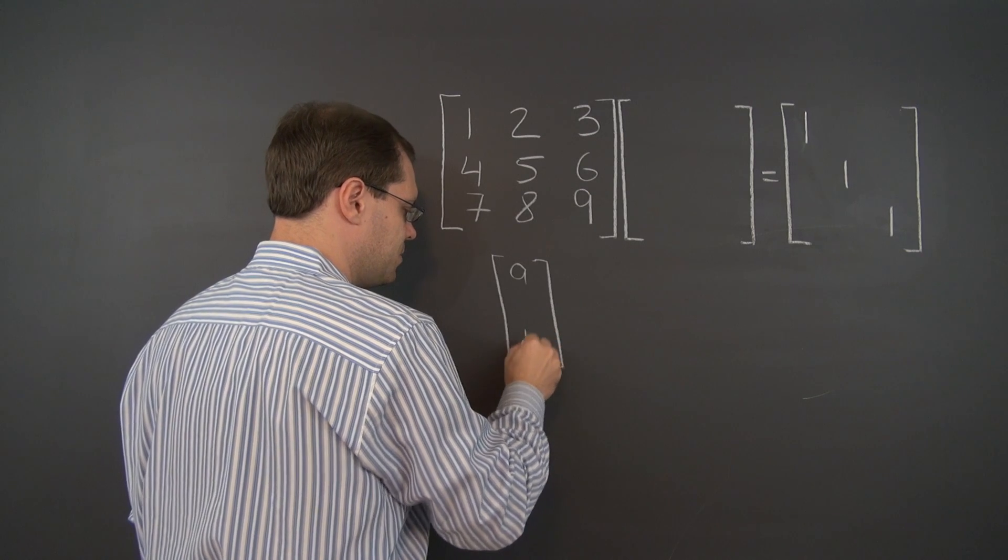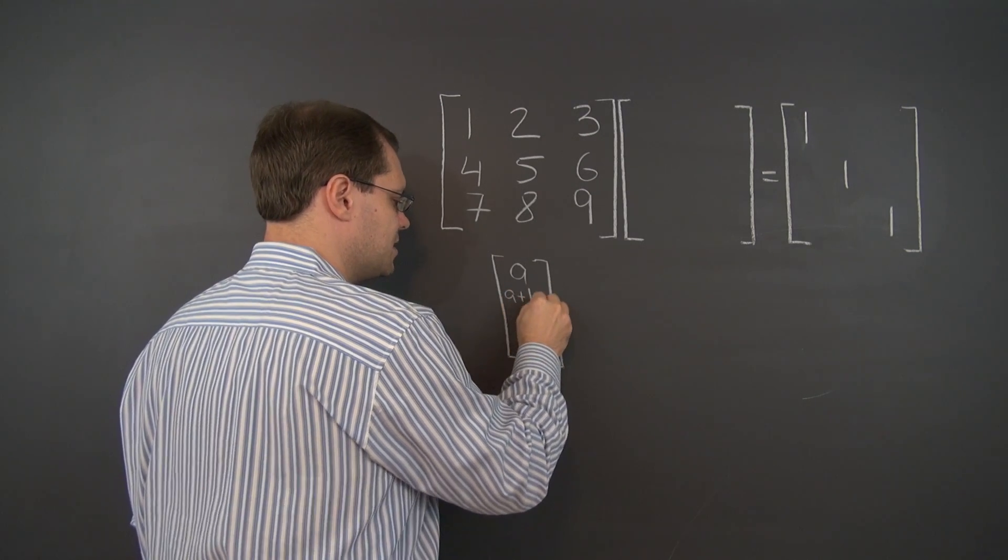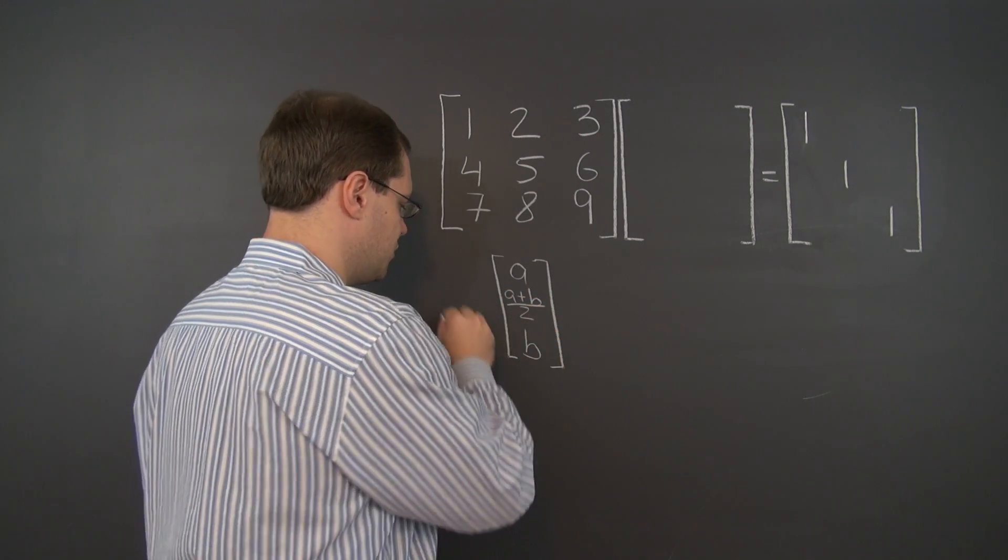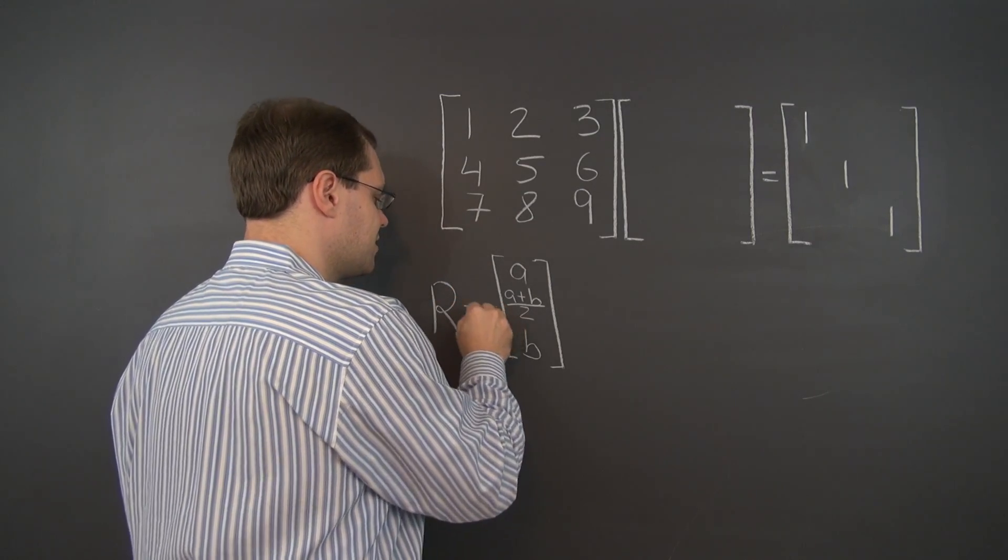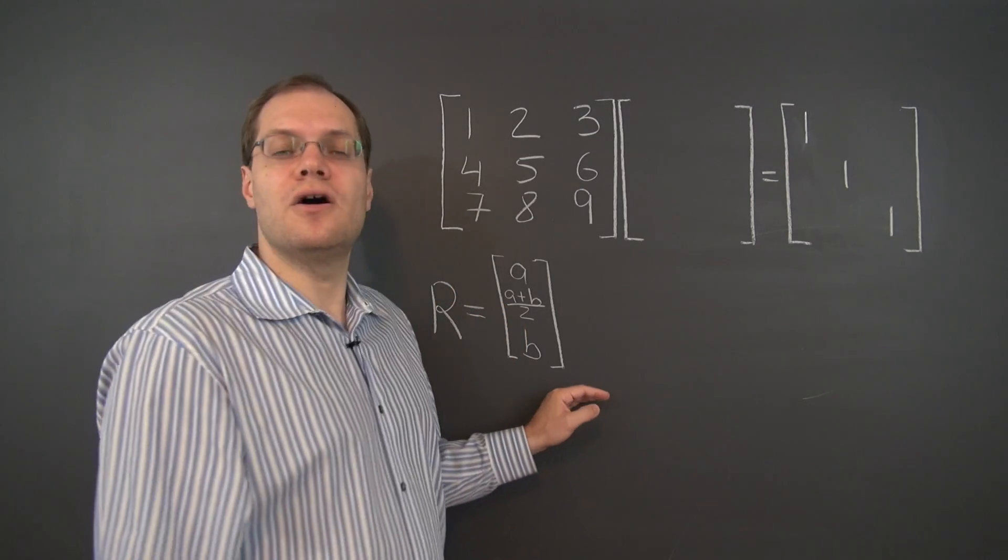Any number, any number, but the middle entry must be the average of first and third. That's the column space of this matrix.